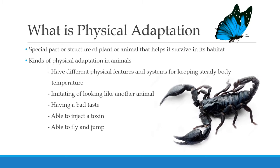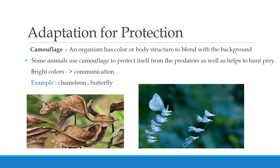Animals also have physical features and systems for keeping their body temperature steady. There are many more physical features that help in adaptation. Adaptation for protection is the next topic. Some animals use camouflage to protect themselves from predators as well as help them hunt prey.